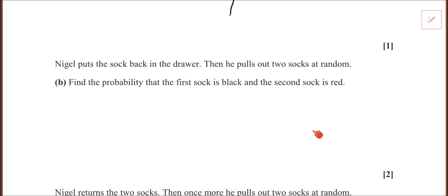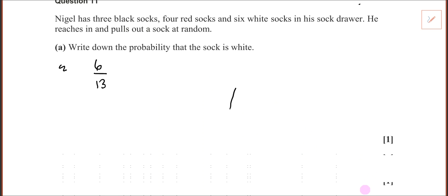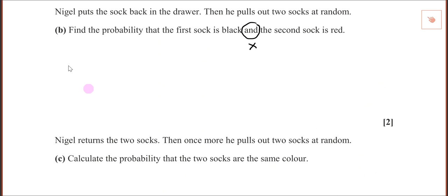Nigel puts the sock back in the drawer and then pulls out two socks at random. Find the probability that the first sock is black and the second sock is red. The word 'and' means multiply. The probability that the first sock is black is three from thirteen.